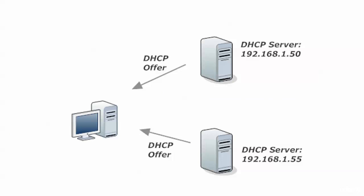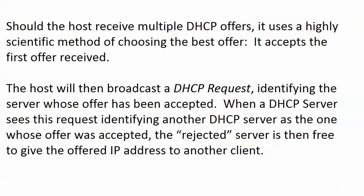If we have two DHCP servers that can answer that initial message, they will both send back DHCP offers — you can see them coming from two different servers. The host now has to choose which offer it's going to accept. You might think this involves an extremely complex algorithm, but you'd be wrong. The highly scientific method is that the host simply accepts the first offer it gets.